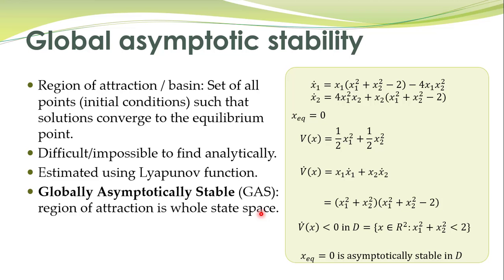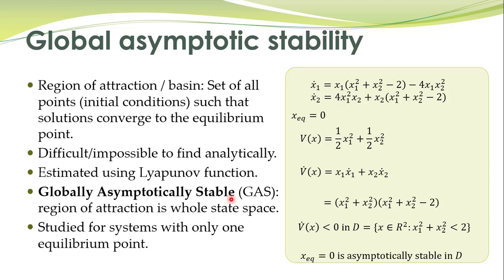This is basically an estimate of the region of attraction for this equilibrium point. So if this region of attraction is the whole state space — that is, for any set of initial conditions, trajectories converge to the equilibrium point — then that equilibrium point is called globally asymptotically stable.